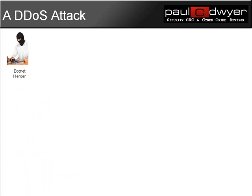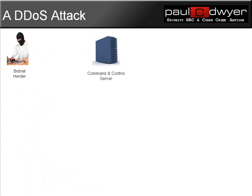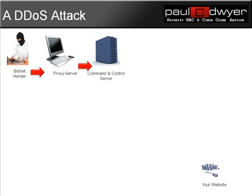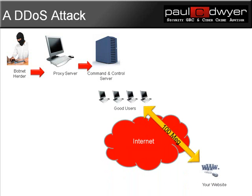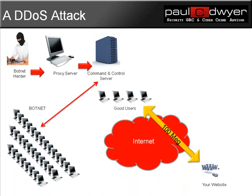A typical attack scenario starts off with a botnet herder who will have a command and control server. This command and control server will be contacted via a number of proxy servers in order to disguise the identity of the botnet herder. A typical scenario is that there will be a website online via the internet with a good solid connection back to its users, but the command and control server will be able to control the botnet — a network of zombie computers — controlled by the botnet herder to issue various types of commands in order to execute a particular vector of attack.